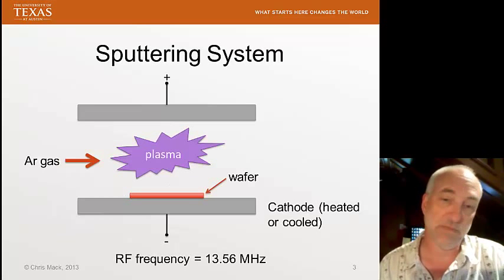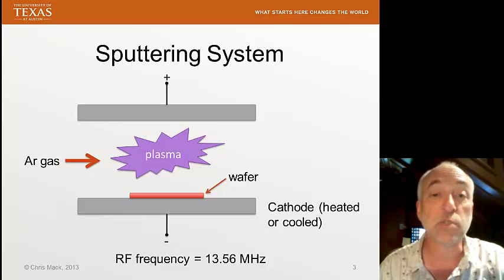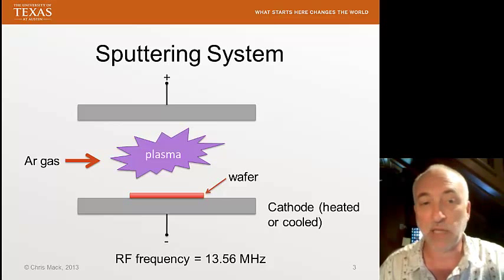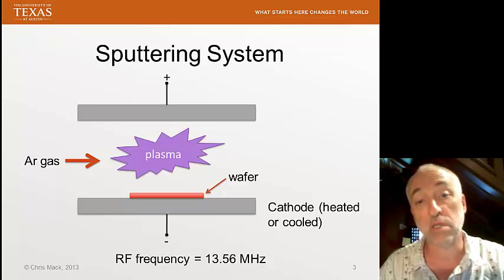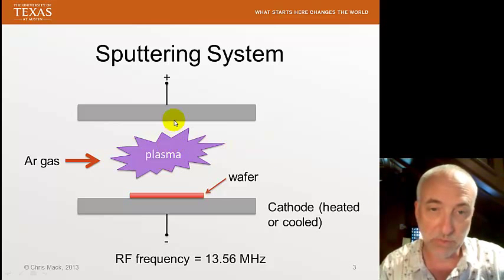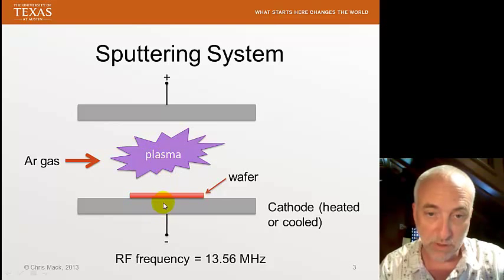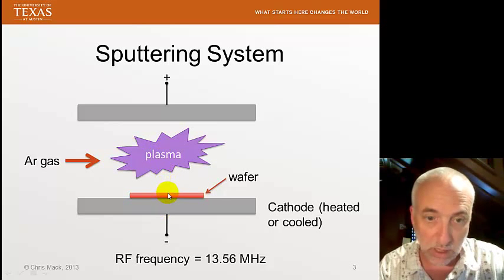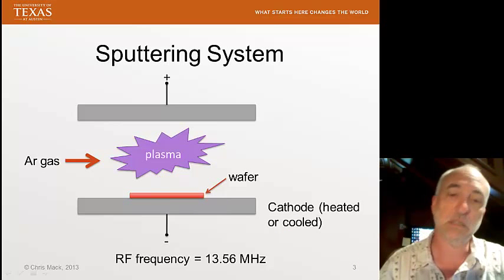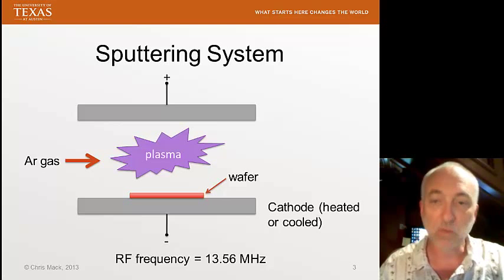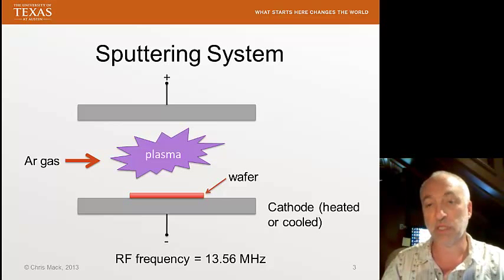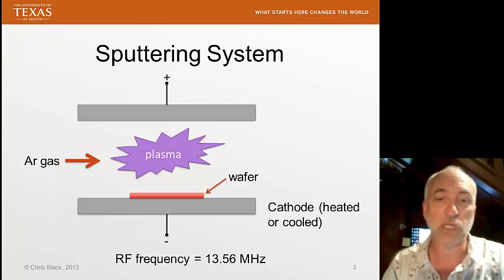A very common configuration is a parallel plate configuration. We have an inlet and an outlet for the argon gas, which flows through the system. We create a plasma in the middle, and then a bias between the plasma and the wafer. The negative voltage on the wafer causes the argon positively charged ions to accelerate down, strike the wafer, and cause etching. We often cool the wafer because it can get hot from all this ion bombardment, but sometimes we heat it for certain purposes.